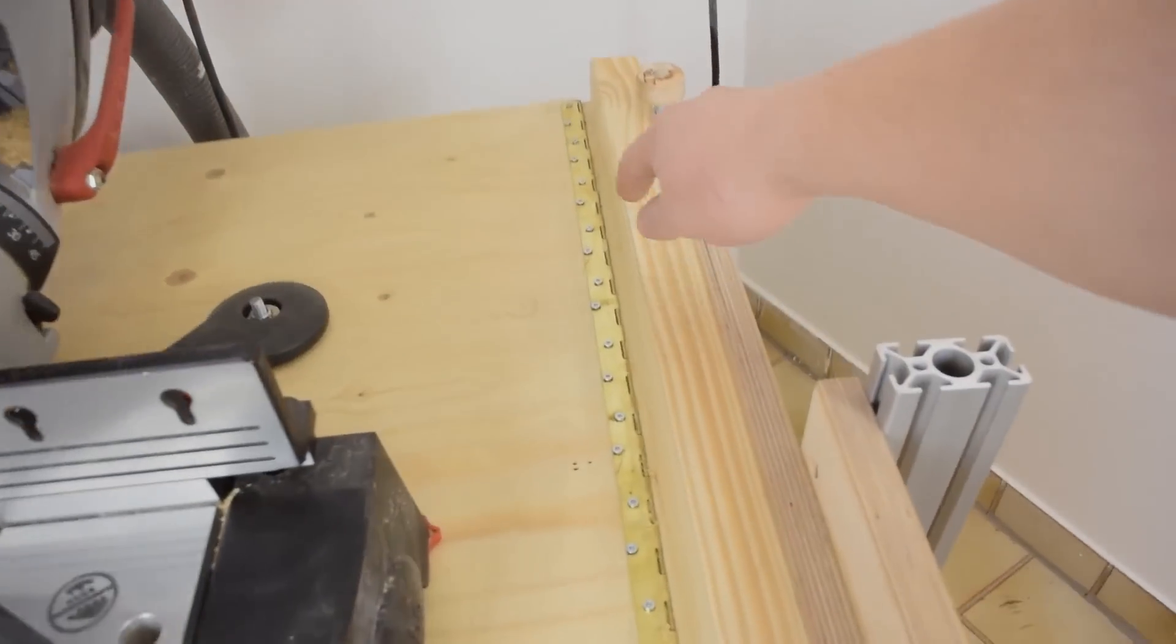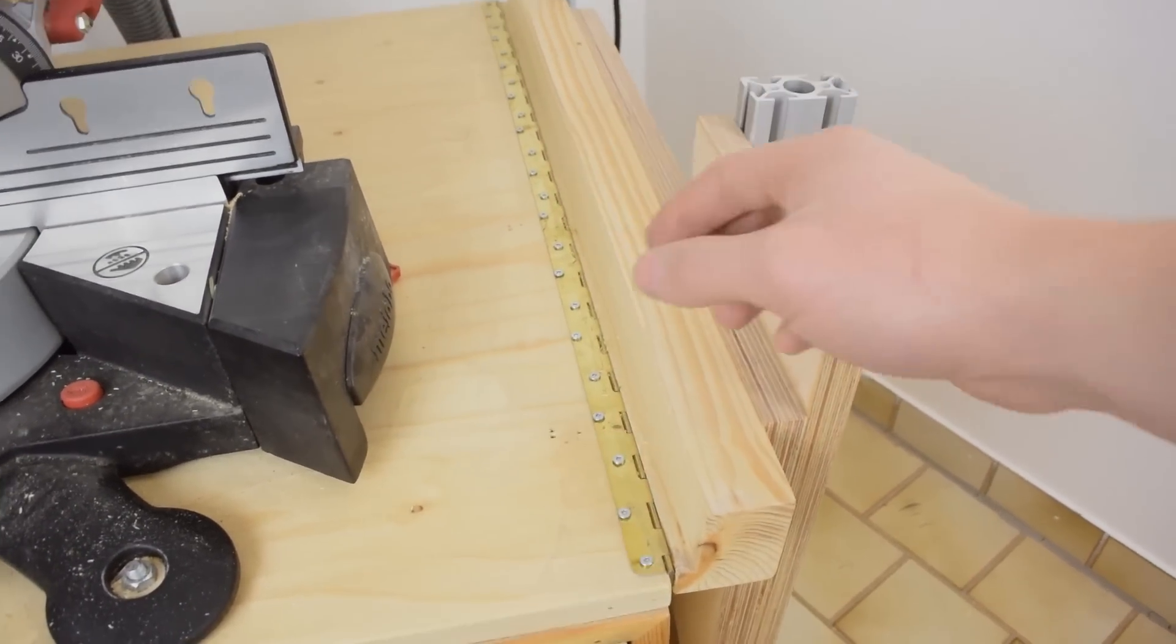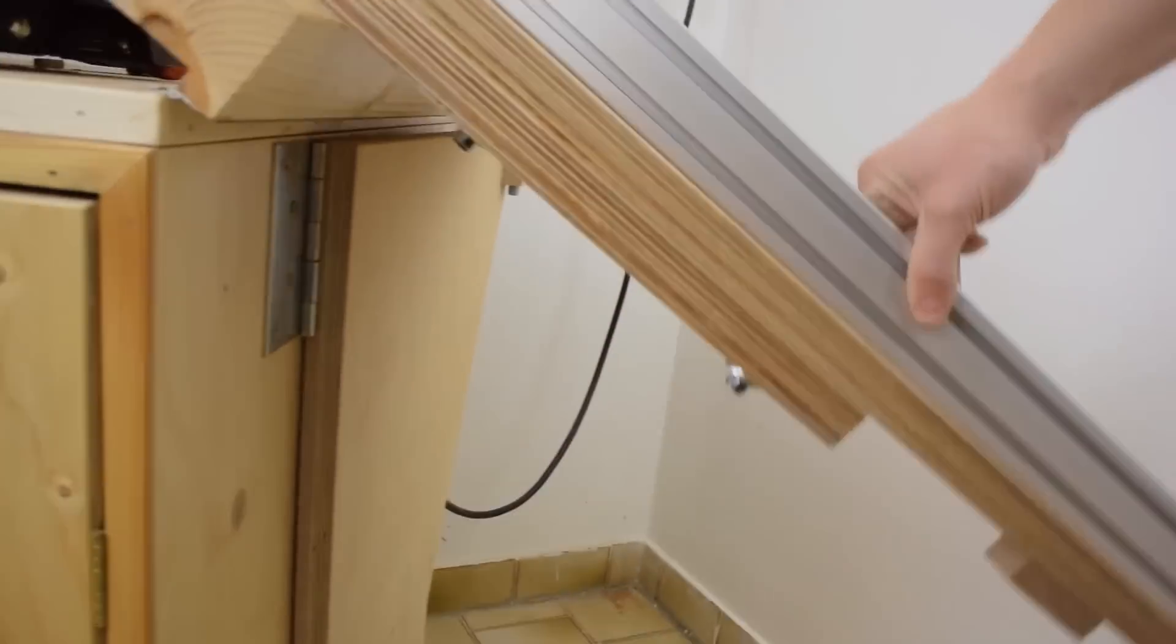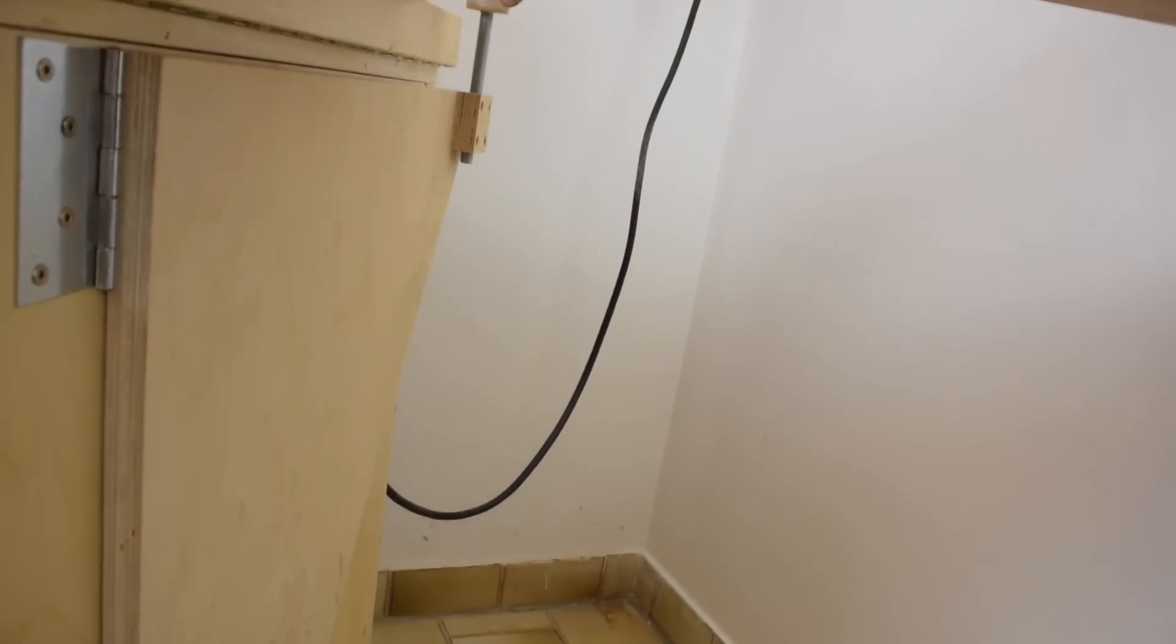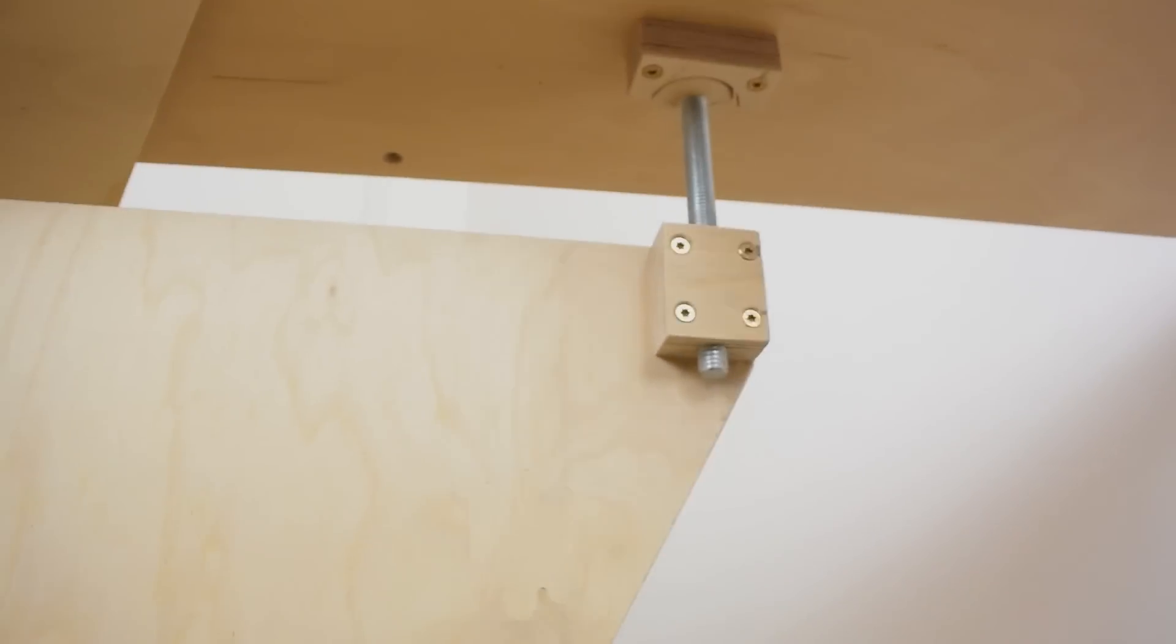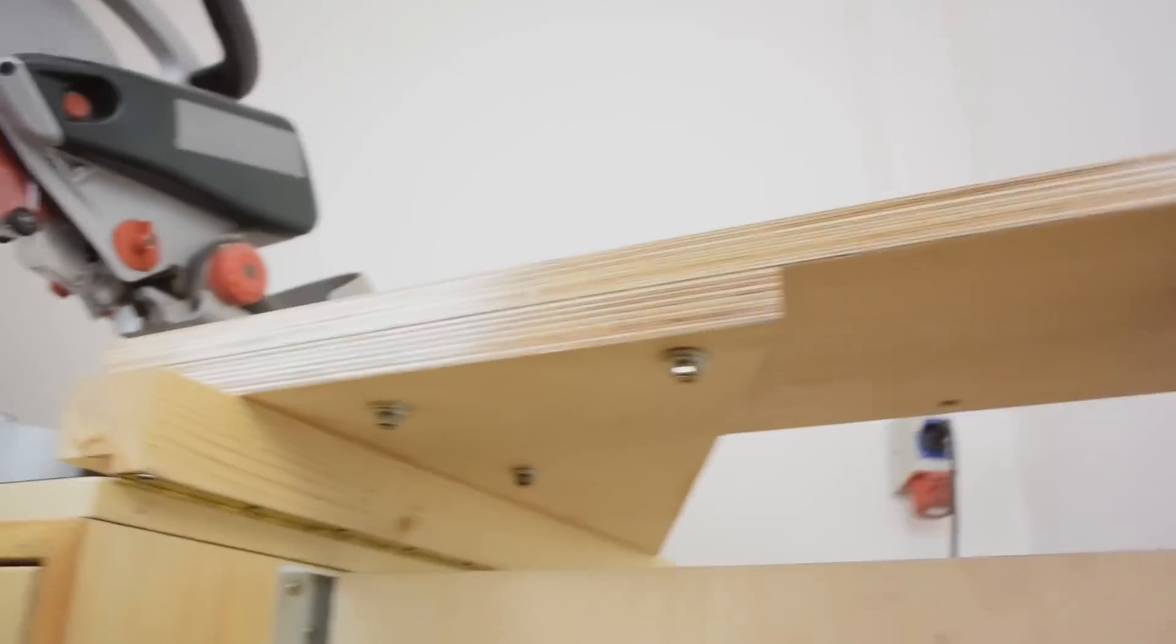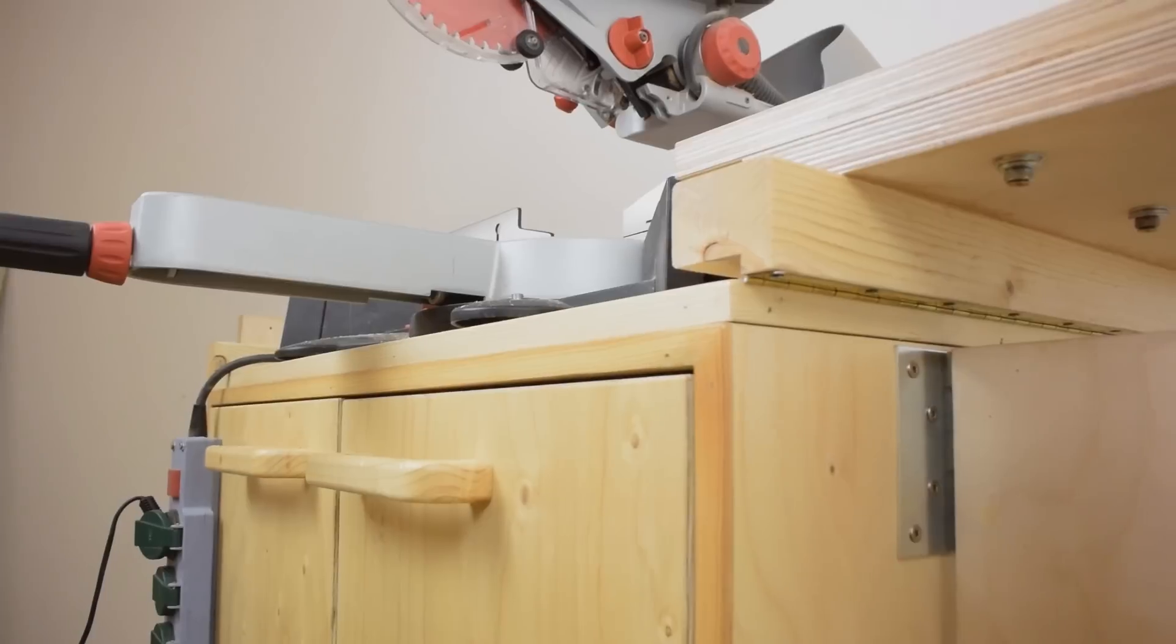To make these wings as strong as possible I used a continuous hinge, and they are supported by these triangles made from Baltic birch plywood. By turning this piece of threaded rod I can adjust the wings so that they'll end up in one plane with the table of the saw.